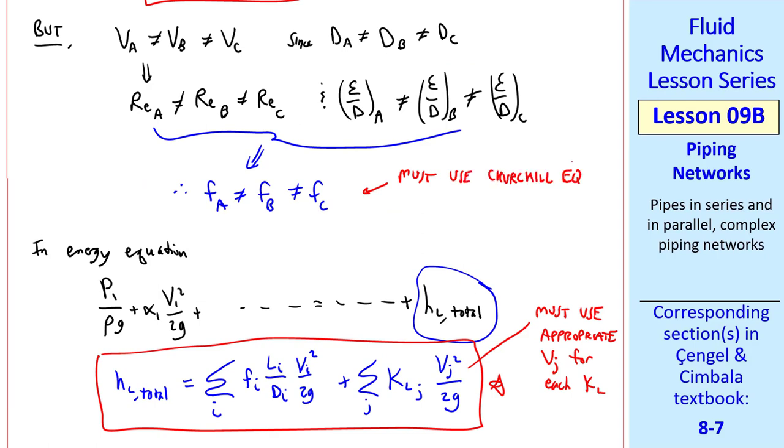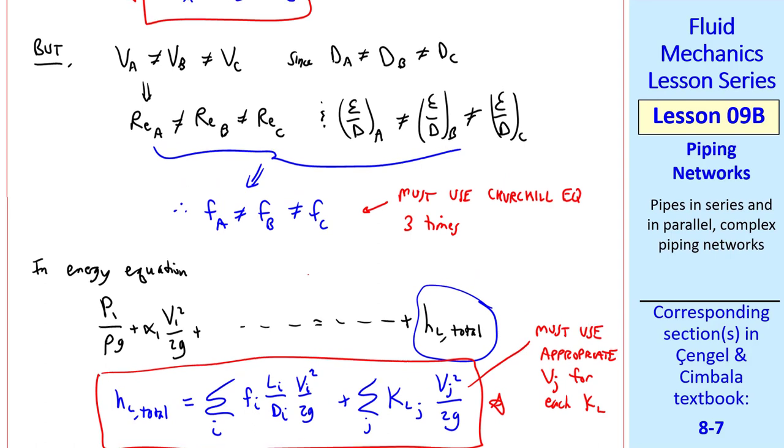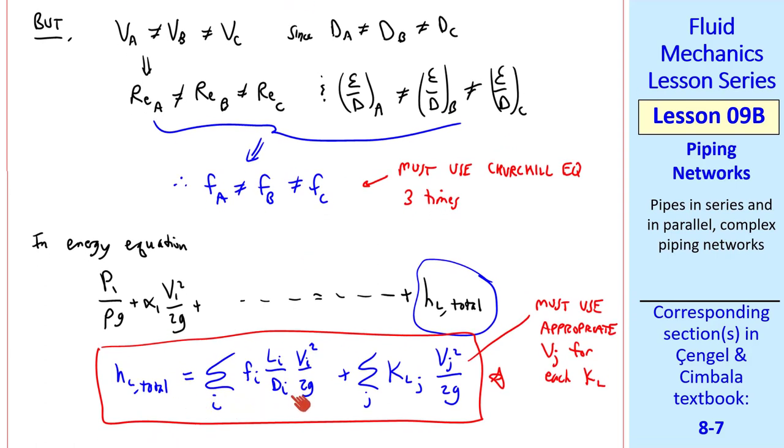One other comment is that we must use the Churchill equation three times. These problems are really no different than what we've already been doing, other than the head loss term, and having more calculations.